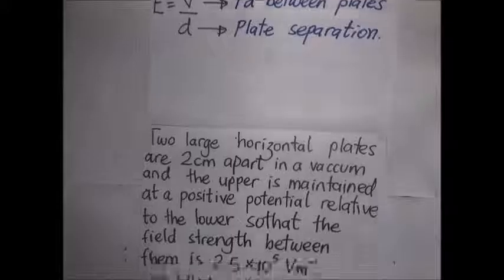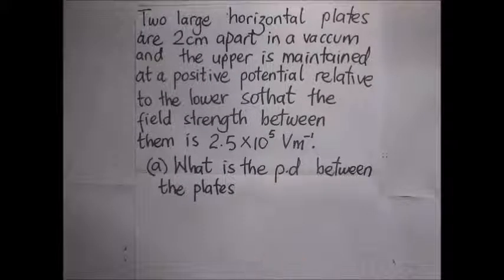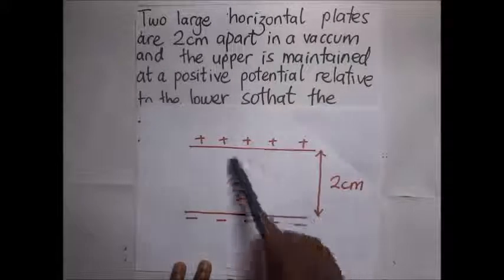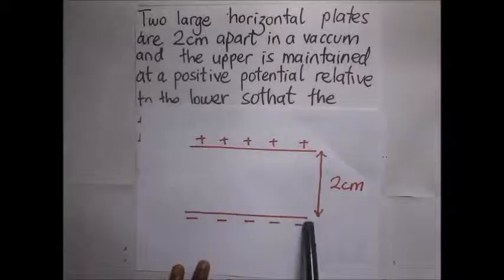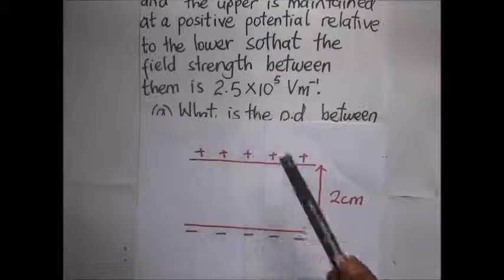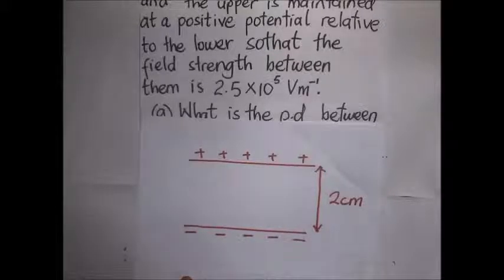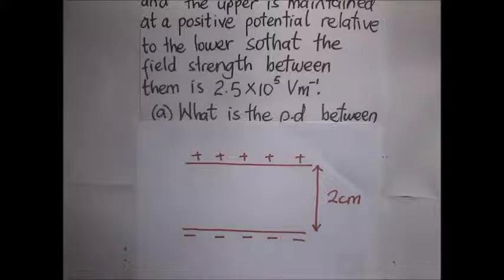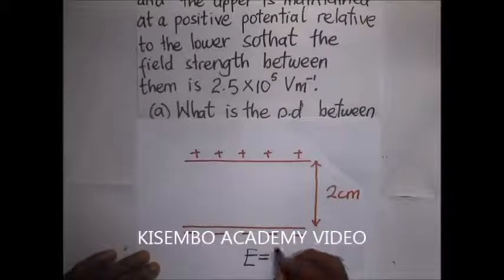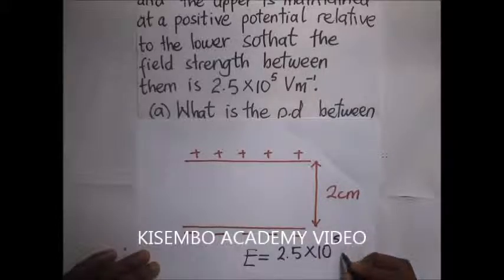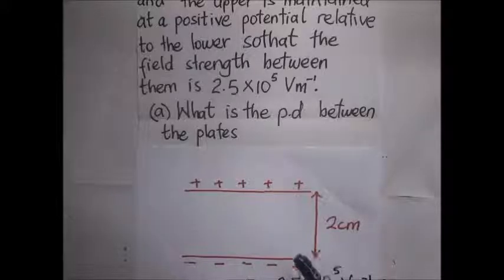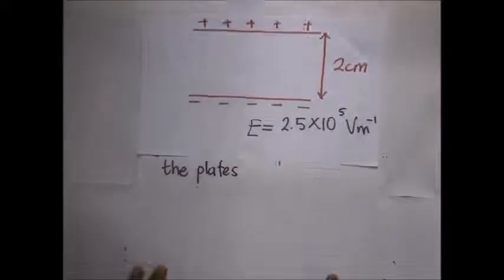We shall look at a worked example. We have two horizontal plates that are two centimeters apart, in a vacuum, as shown in the diagram. The upper plate is maintained at a positive potential relative to the lower plate, so that the field strength between them is 2.5 times 10 to the power 5 volts per meter. So our value of E is 2.5×10⁵ V/m. They are asking us to find the potential difference between the plates.